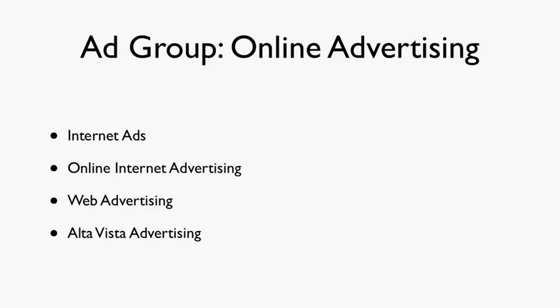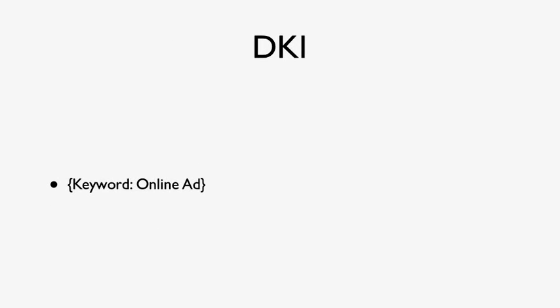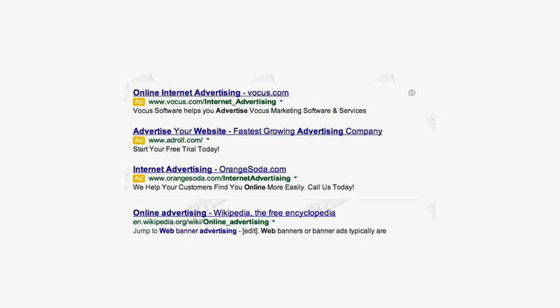To do Dynamic Keyword Insertion, when you create a text ad, you simply use the following: you put curly brackets, then the word 'keyword', then a semicolon, and then a default word that you'll allow in there if none of your keywords exactly match. So say, for example, none of those four keywords were an exact match — we'd be happy to have the word 'online ad' in our headline. But if it does match for 'online internet advertising' and you have Dynamic Keyword Insertion on, well, that's exactly what Vocus did.